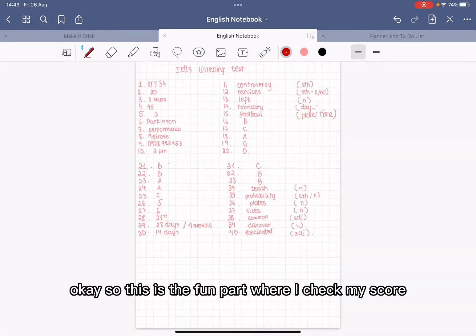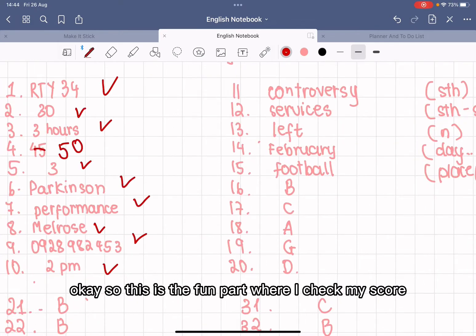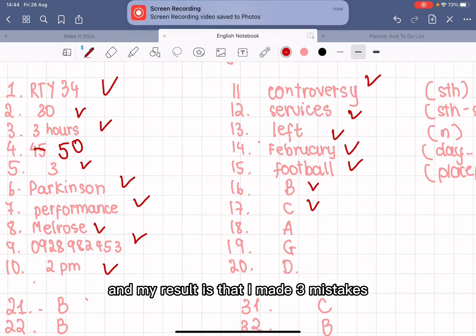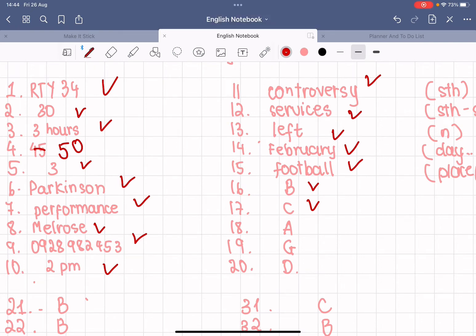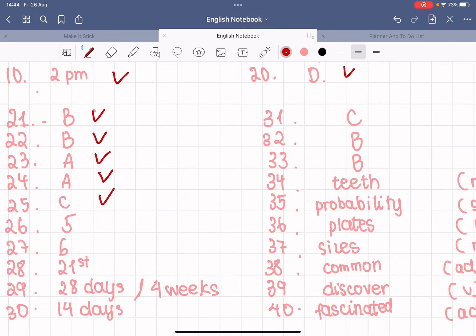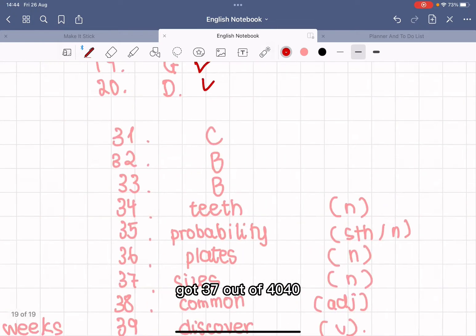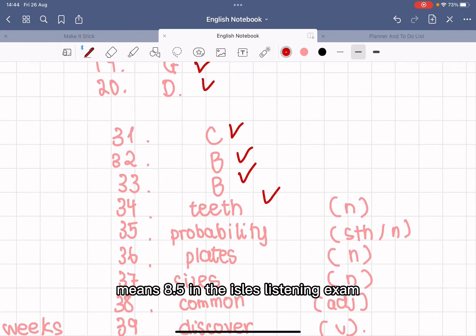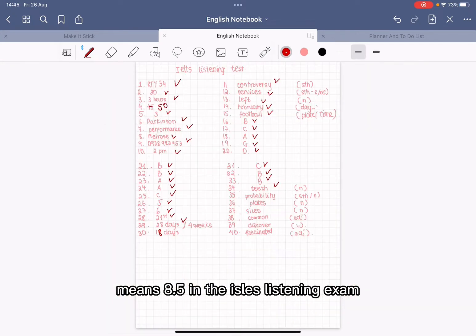Okay, so this is the fun part where I check my score. My result is that I made three mistakes, so I got 37 out of 40. Forty out of 40 means 8.5 in the IELTS listening exam.